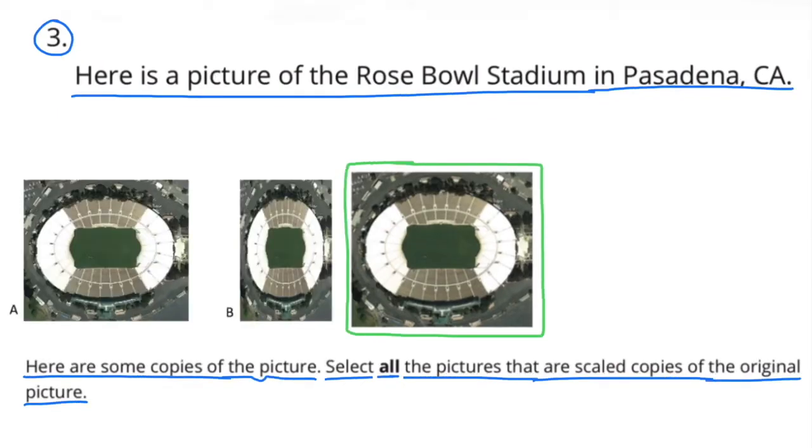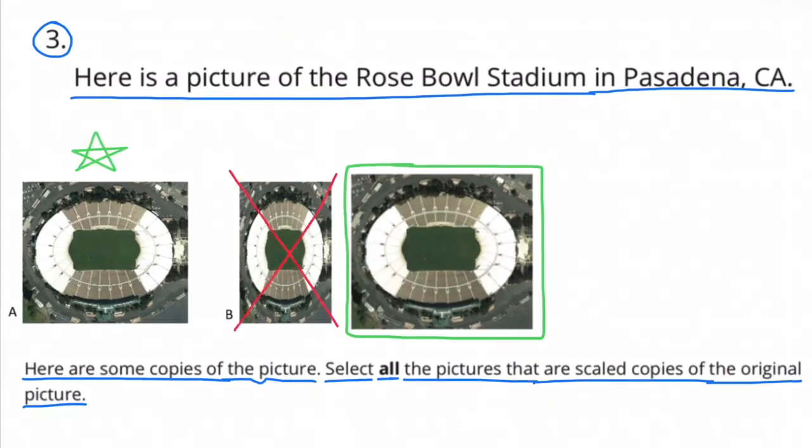Picture A appears to be a scaled copy because its height compared to the original picture looks just a little bit shorter, and its width compared to the original picture also looks just a little bit shorter. But B is not. The height of picture B appears to be about the same, but the length of picture B is much shorter.